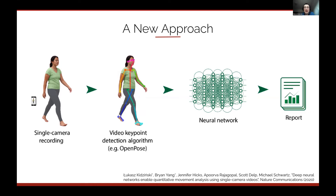We use a keypoint detection algorithm that detects body landmarks without placing any markers on the body — doing a similar job to the expensive motion capture system without the markers. We then take trajectories of those keypoints, feed them into a neural network, and generate a report automatically. Going directly from positions to the report doesn't work well on its own because the signal is noisy, but denoising with neural networks yields meaningful results, as published recently in Nature Communications.